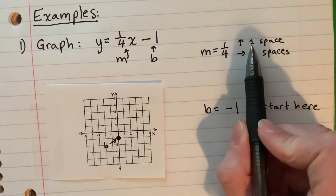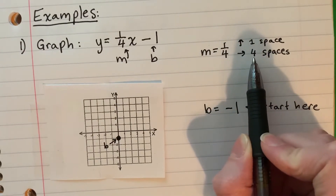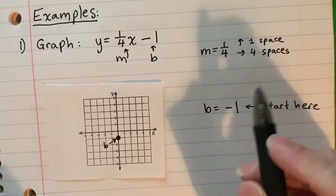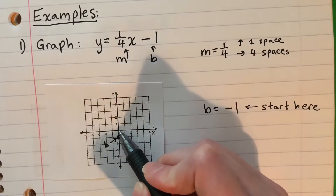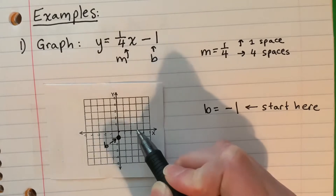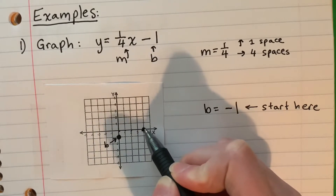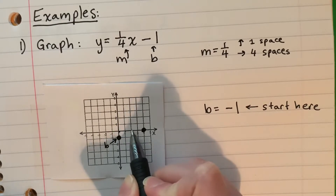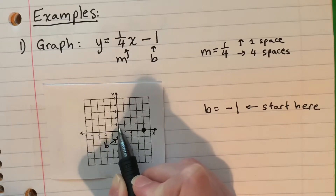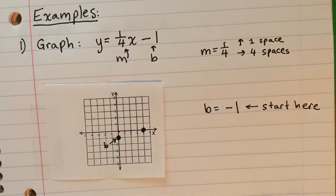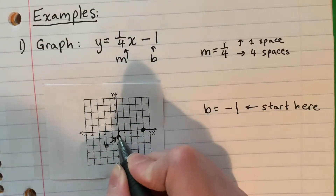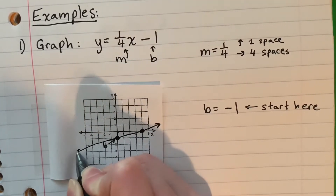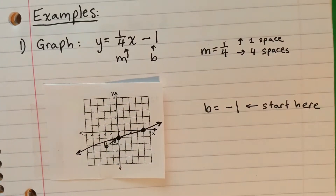Now I go up one space and then four to the right — one, two, three, four — and put a point. Then do it again: up one and four to the right — one, two, three, four. Then go ahead and make a line with arrows at the end. Very simple.